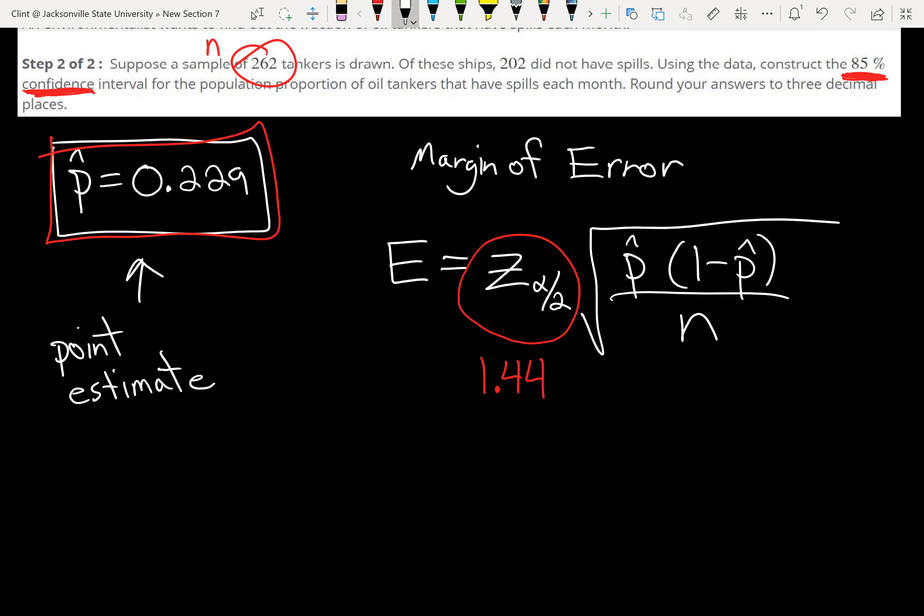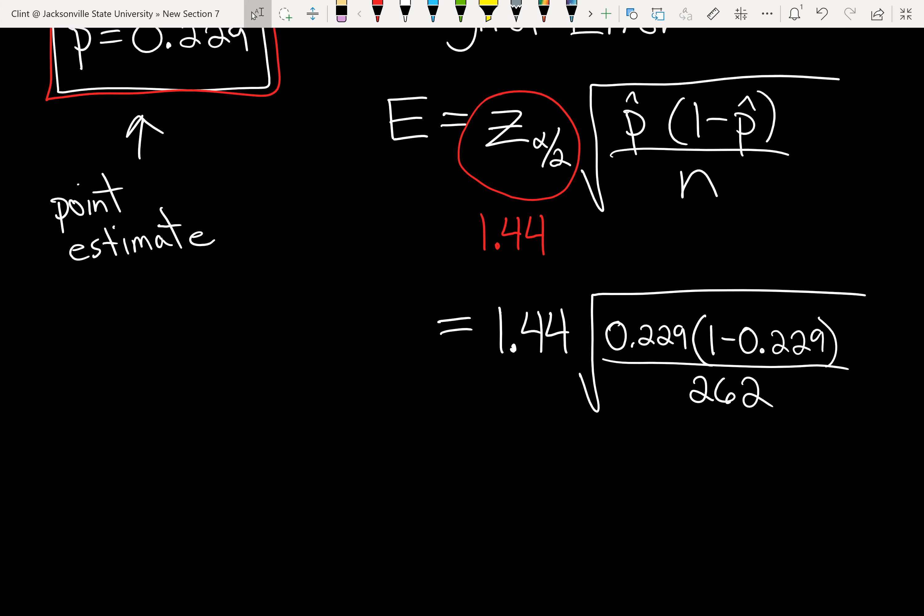So plugging into our formula here, we have 1.44 times the square root 0.229 times 1 minus 0.229 divided by 262. And remember on margin of error, so that we don't get rounding error, we don't want to round too early. So with margin of error, we want to leave five or six decimal places. So if we do the calculation, I'm going to tell you what I'm typing in my calculator. You can just type it in just like it's written, but I do the part under the square root first.